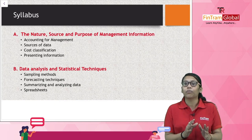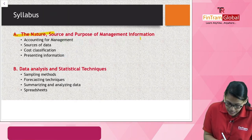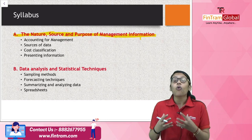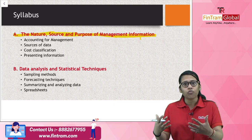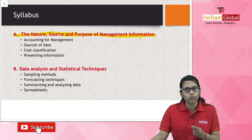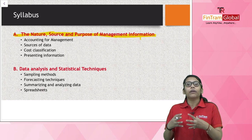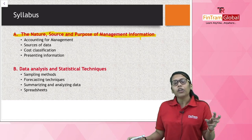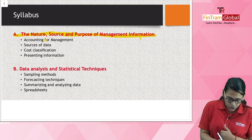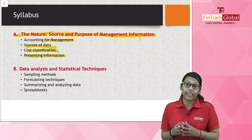Our first syllabus section is Section A — Nature, Source and Purpose of Management Information. In this section we will understand what management accounting is, since it's a new subject. We'll cover the basic terms and basic concepts of management accounting, which is very important as it will strengthen your foundation. Topics covered here include: introduction to management accounting, accounting for management, sources of data, cost classification, and presenting information.